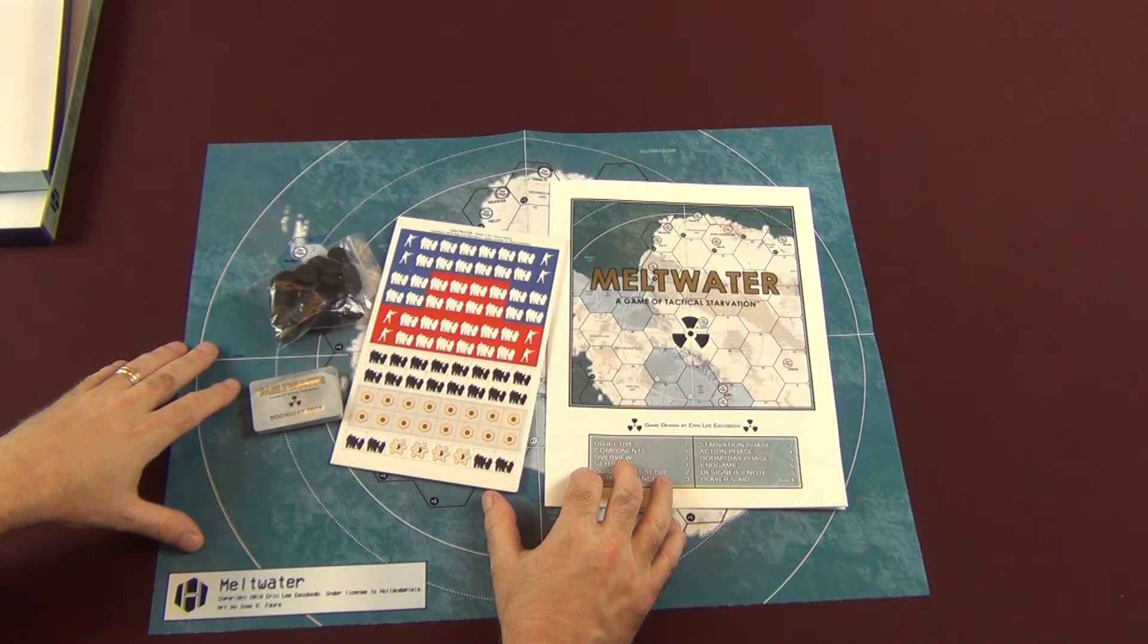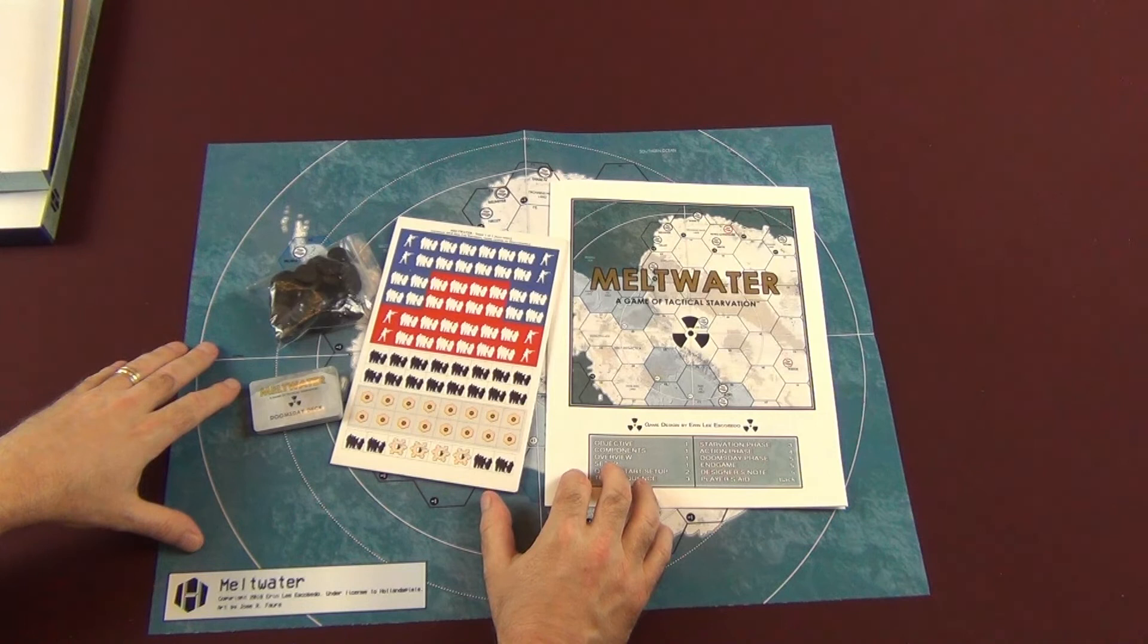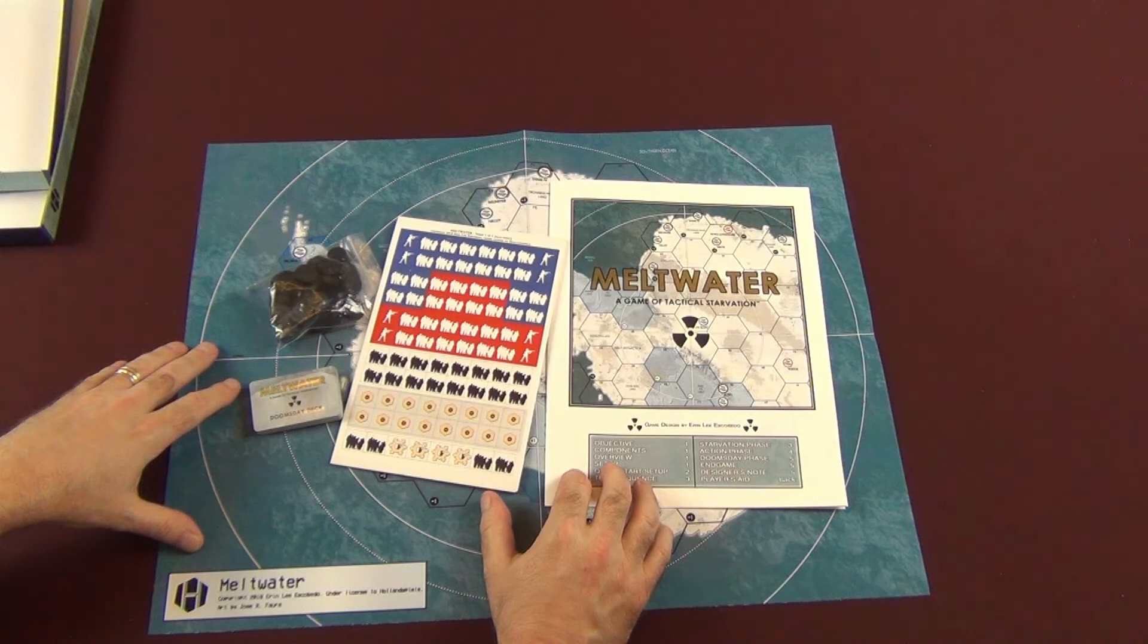And I think you will as well. But get on their mailing list and check them out and see what they've got, because they've got games for pretty much everybody in their catalog. But that is Meltwater. Give it a look. If you like that NATO Air Commander, go ahead and place an order. Tell them Mo sent you. And that's that. All right. I will see you guys next time. Thanks for tuning in.